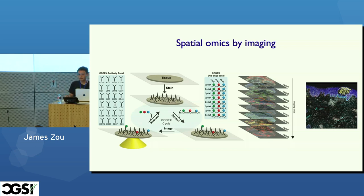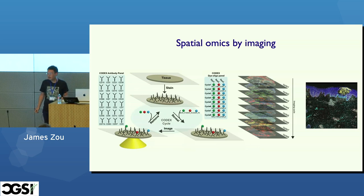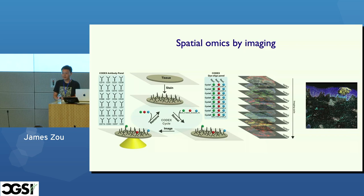Any questions about how these experiments work? The question about the upper limit of markers in Codex: this technology currently gets up to about 100 antibodies in parallel. The nice thing is that for each antibody, you're imaging at sub-single-cell resolution — you actually see sub-cellular morphologies.